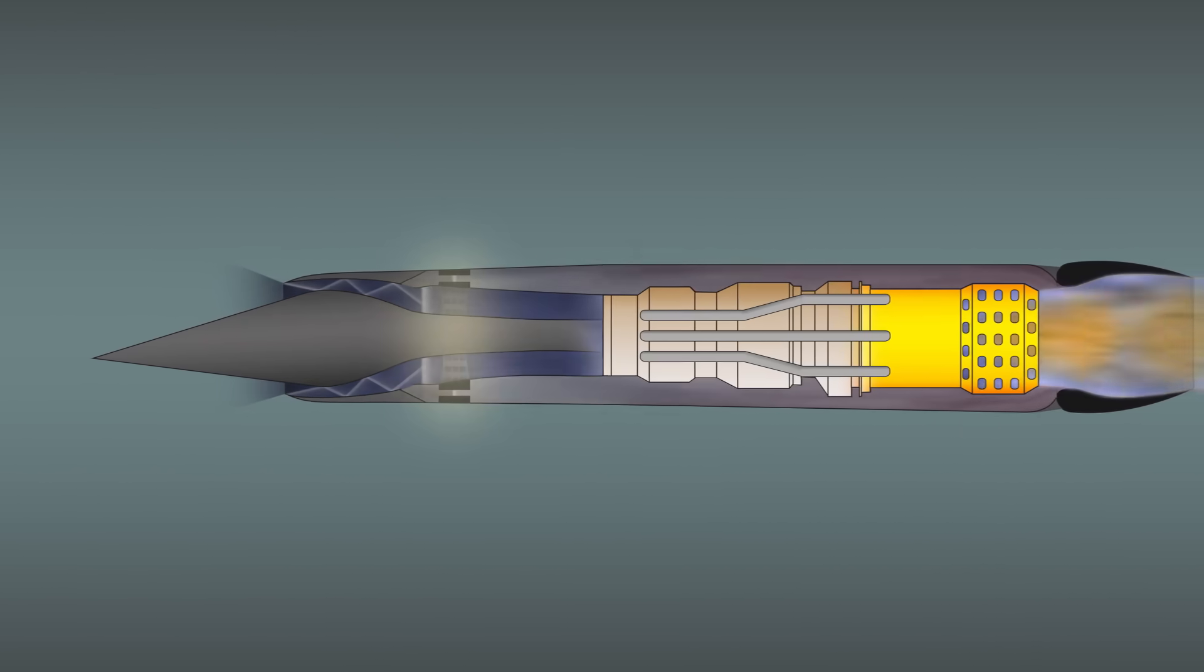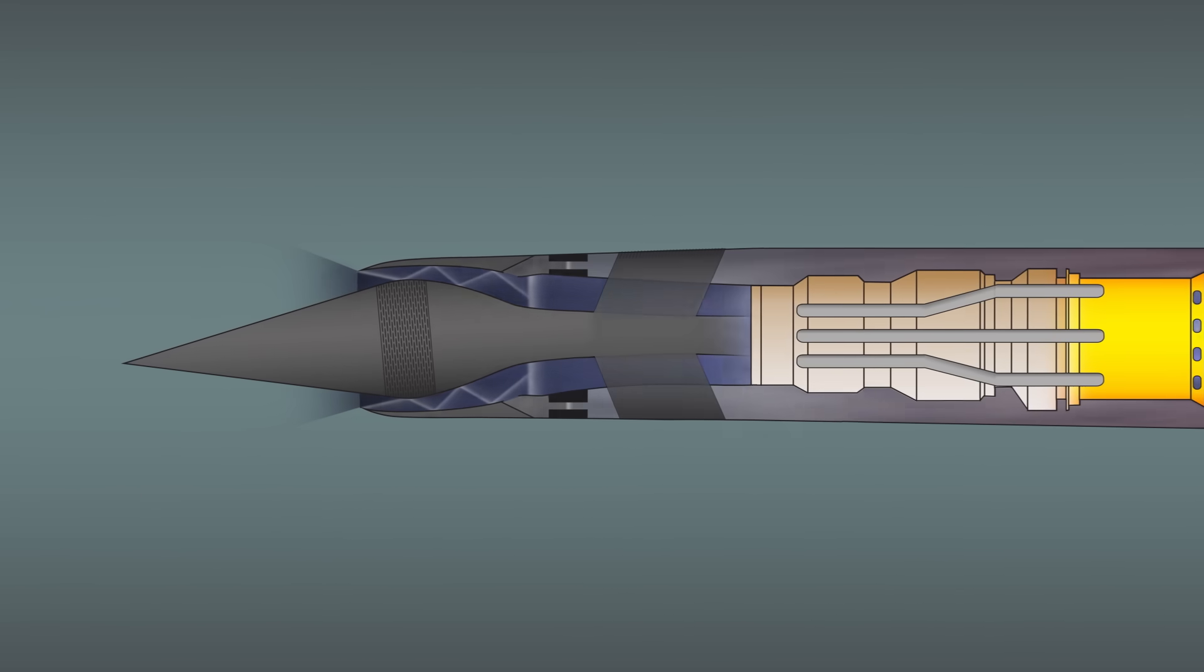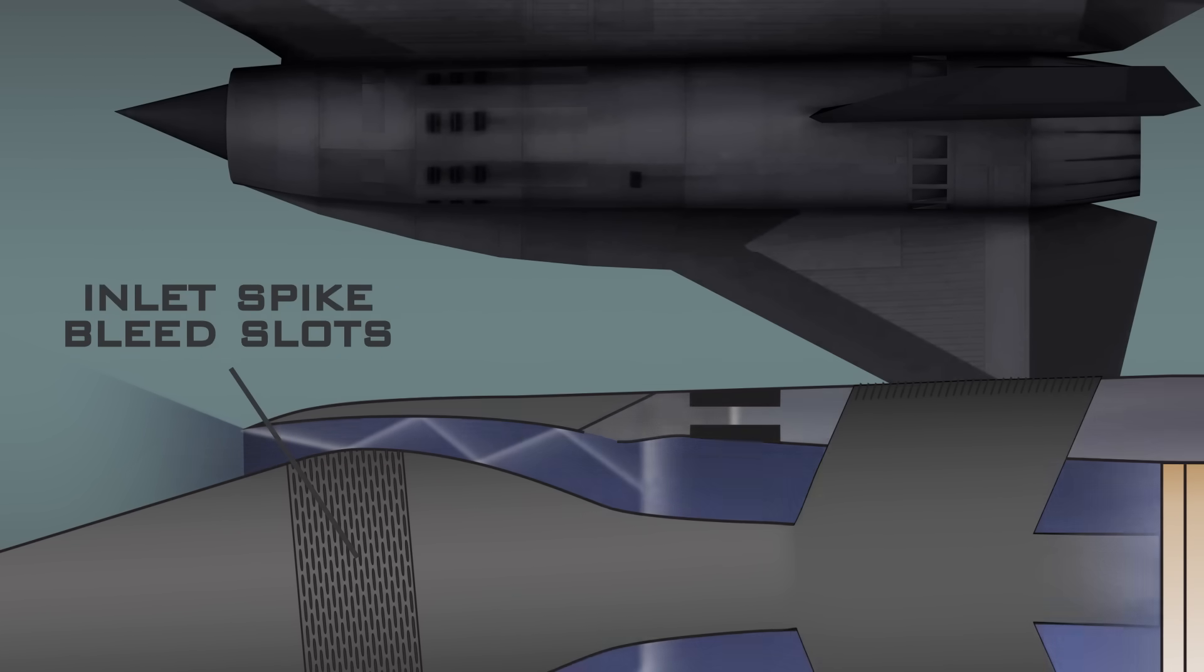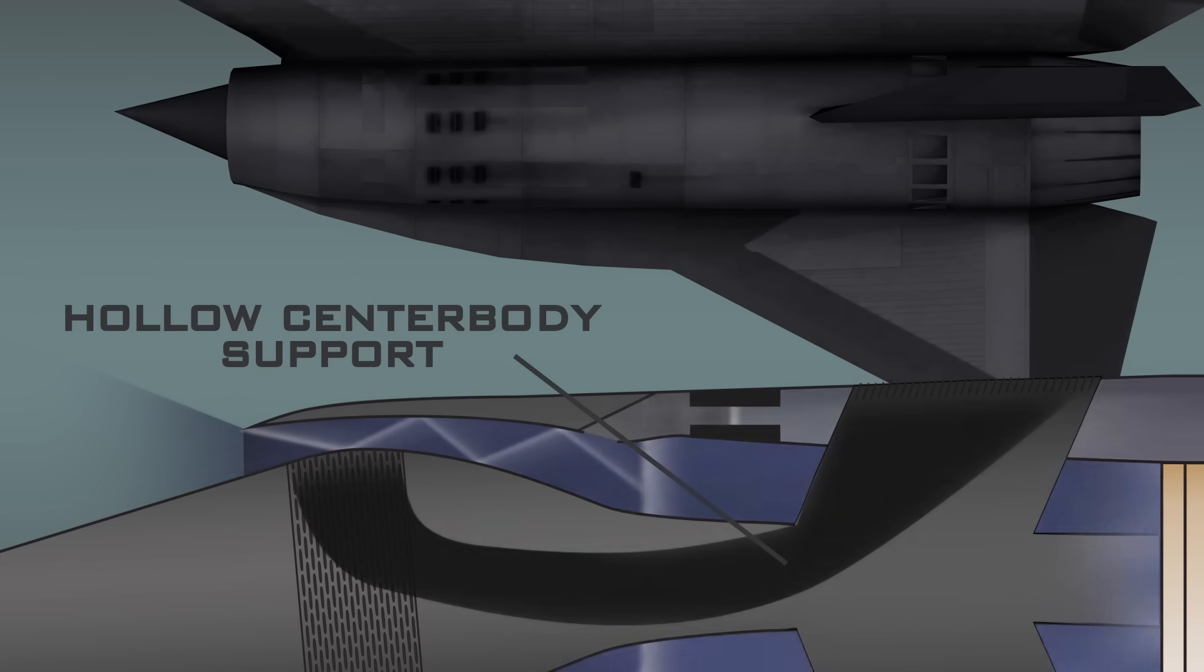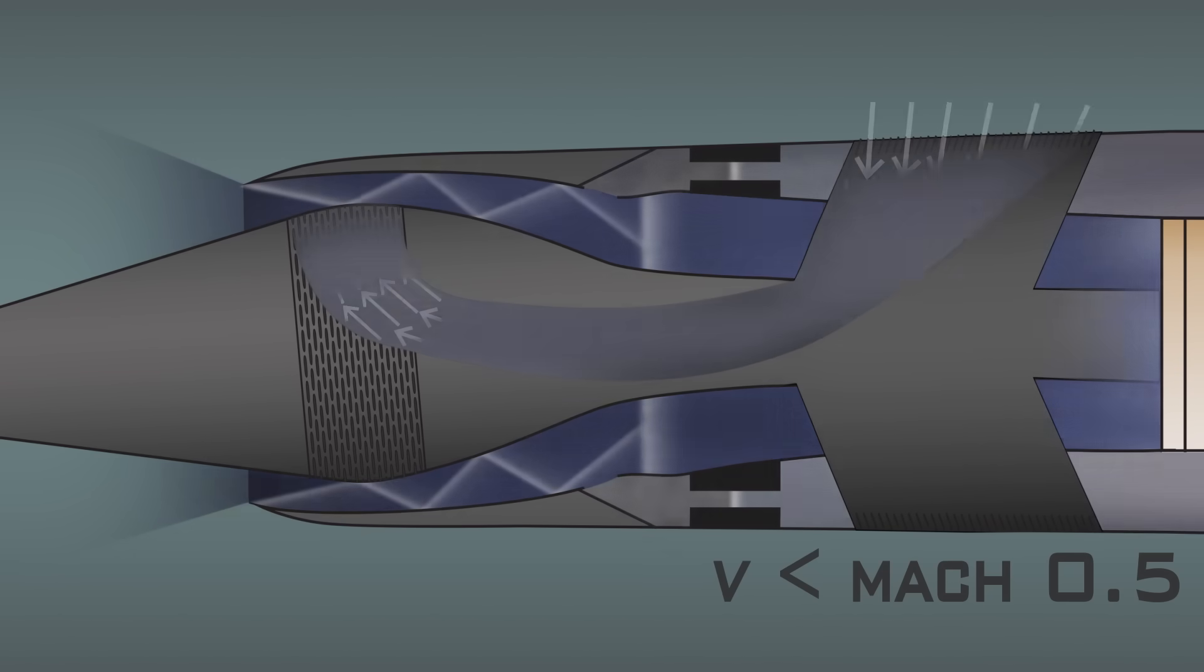The last three details found in the nacelle are required for keeping the normal shockwave in place in the inlet. The first is the center body bleed, which connects the grille on the outside of the nacelle to a set of slits on the spike through a hollow center body middle. At low speeds, the center body bleed allows the engine to pull additional air into the inlet.